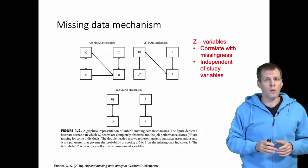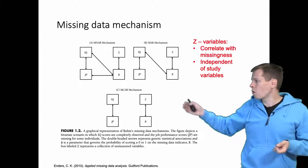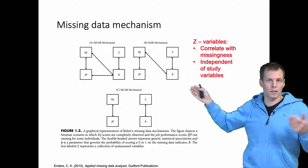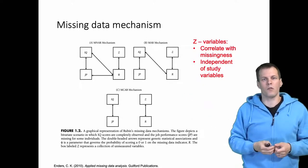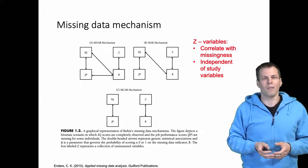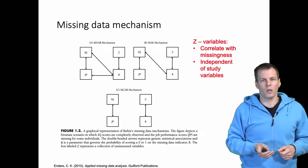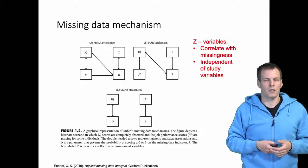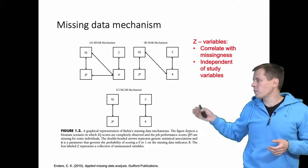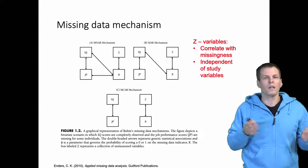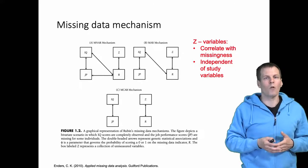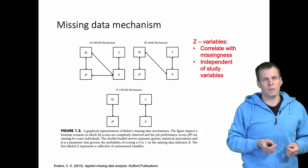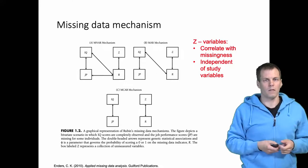The Z variables are assumed to be correlated with selection. So we might say that, for example, whether you have kids or not depends on whether you are working and whether we observe your weight or not. And the Z variables are independent of the study variables. So they are irrelevant, or based on theory they are expected to be uncorrelated with the main study variables.